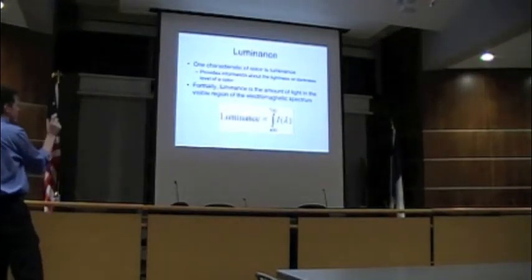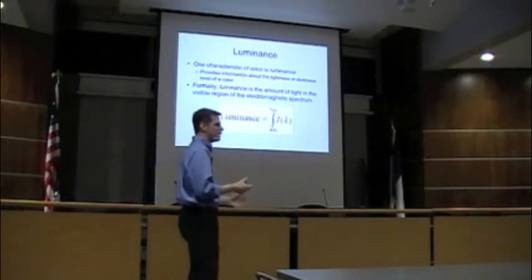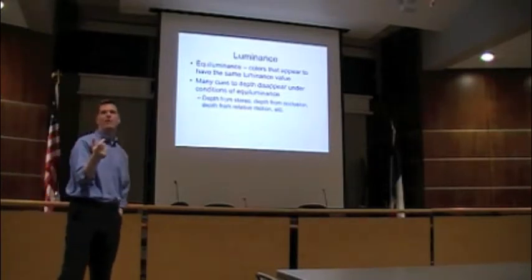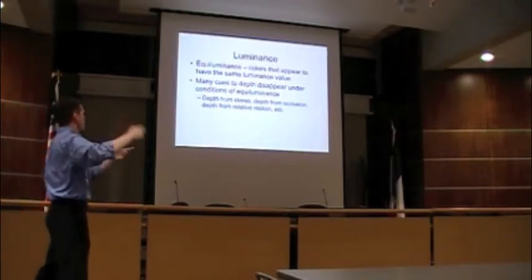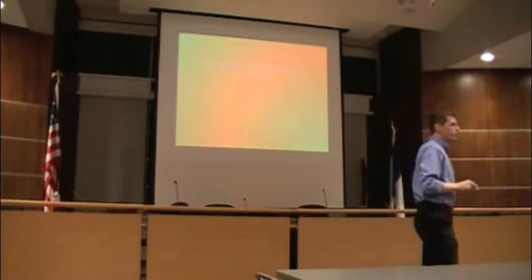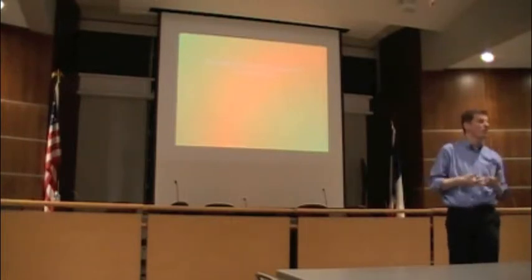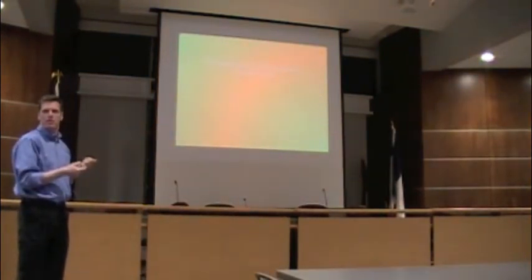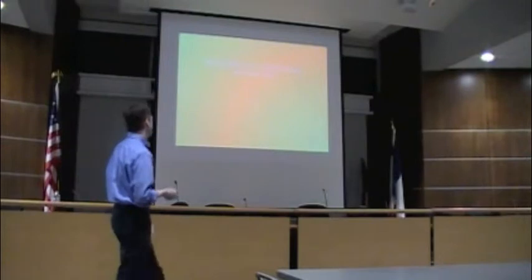Luminance is basically a measure of the amount of light — how bright something is. There's a concept called equiluminance: colors can have the same apparent brightness even though they're different colors. A really bad choice would be having the background and foreground text share the same luminance values. They may be different colors, but if they have the same apparent luminance, it's really hard to read — as in: 'This could be a very annoying choice for a text color, because the background and the foreground have similar luminance values.'